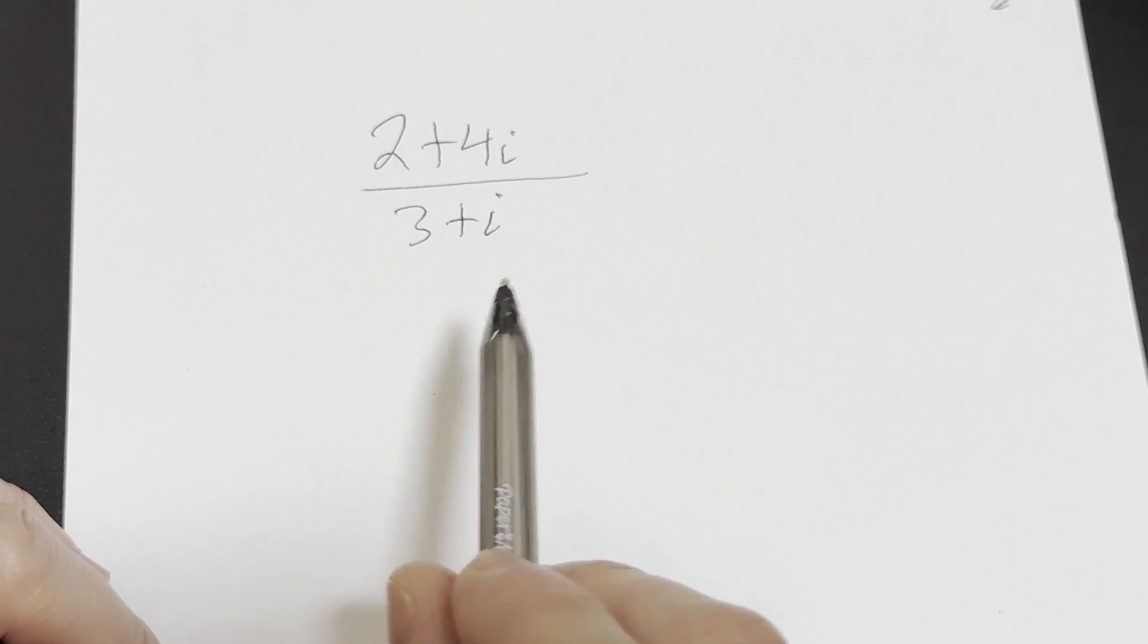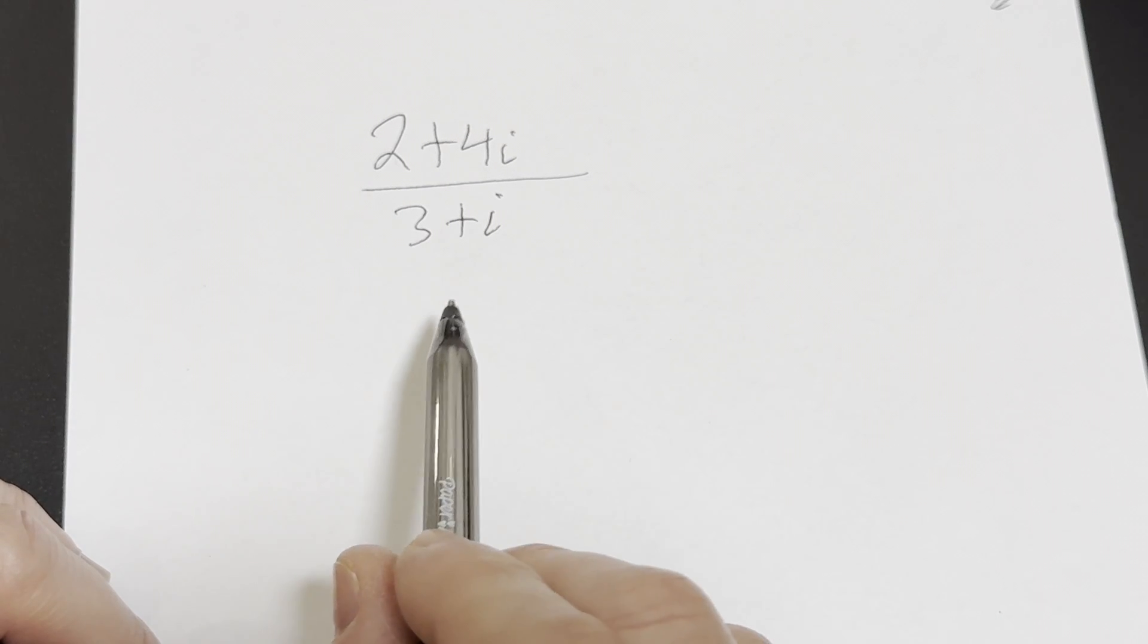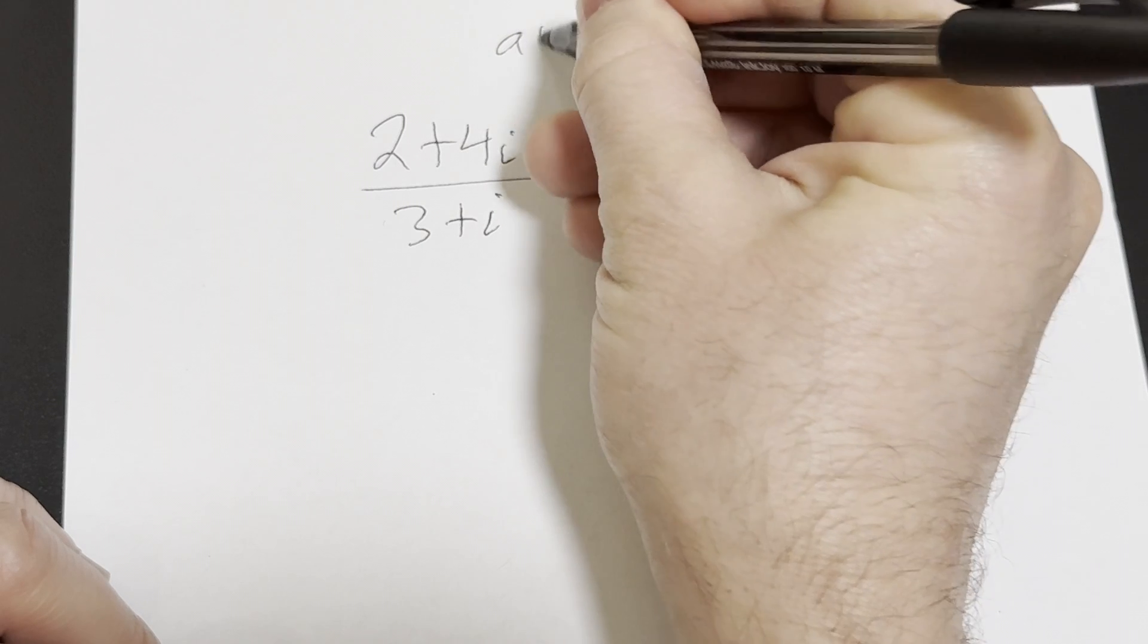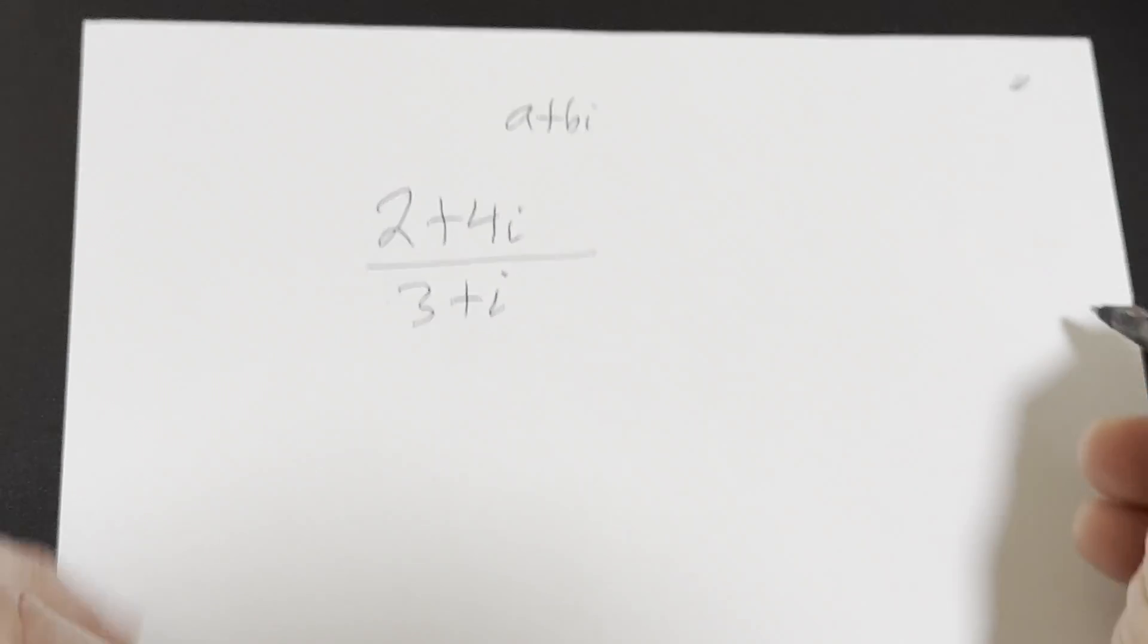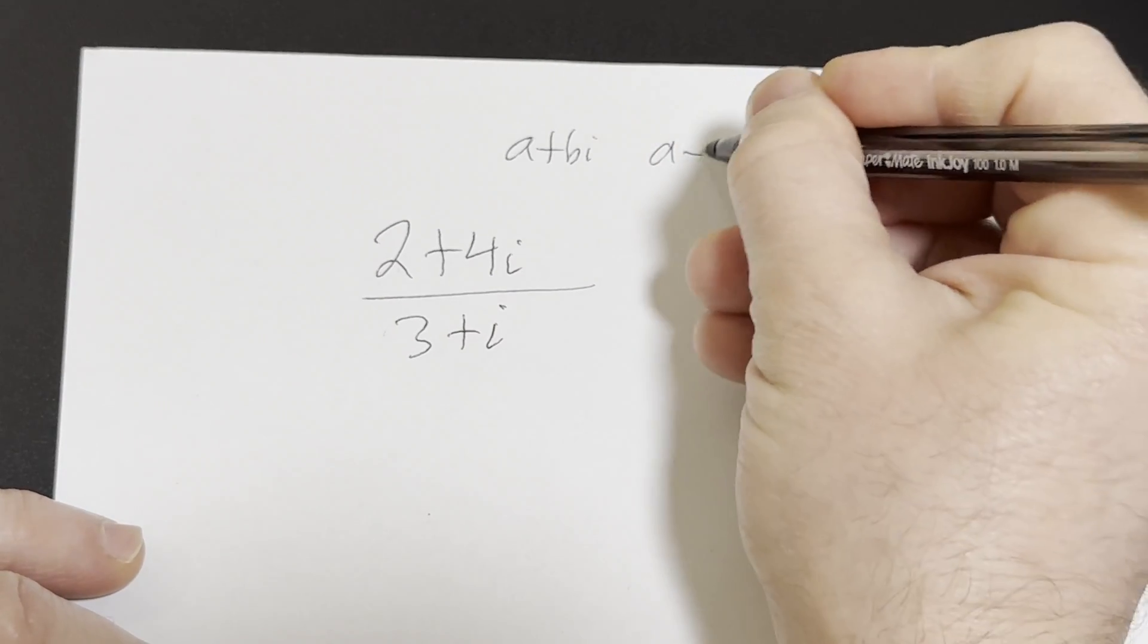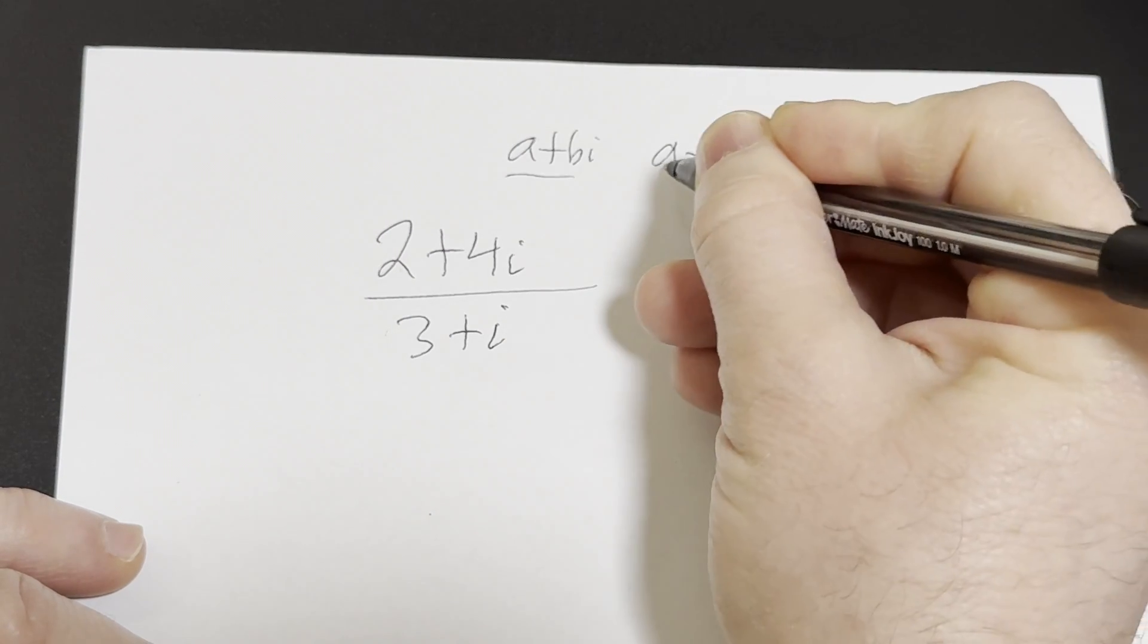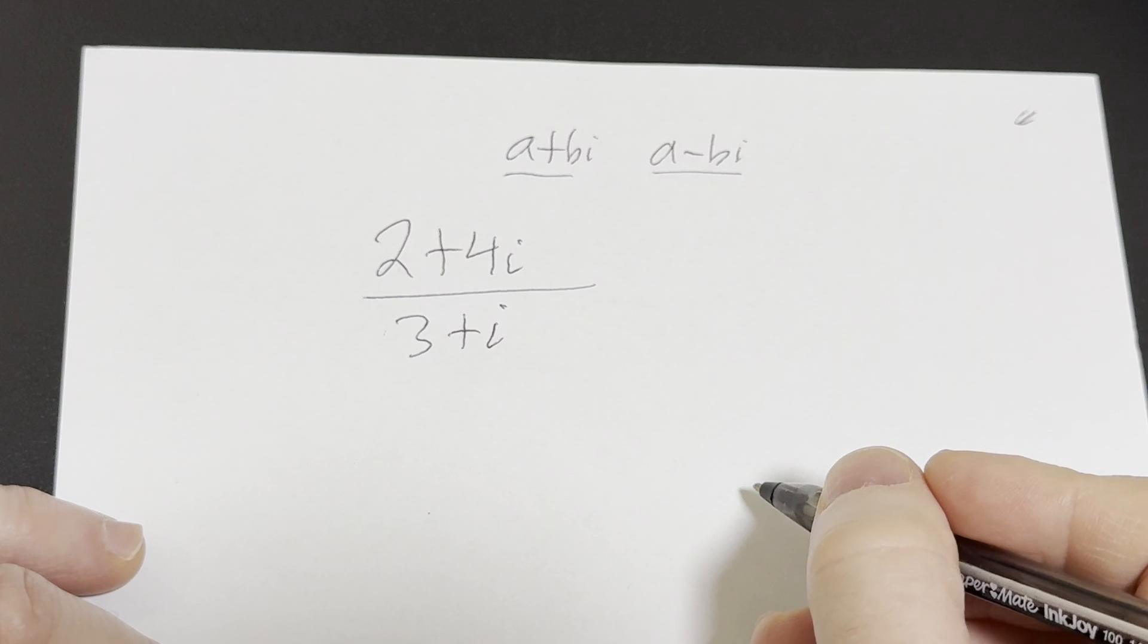So the first thing to do in a problem like this is you want to find what's called the conjugate of the denominator here. So the conjugate of a complex number, say a plus bi, is simply a minus bi. And so when you have a plus bi to find the conjugate you basically switch the sign and that gives you a minus bi.